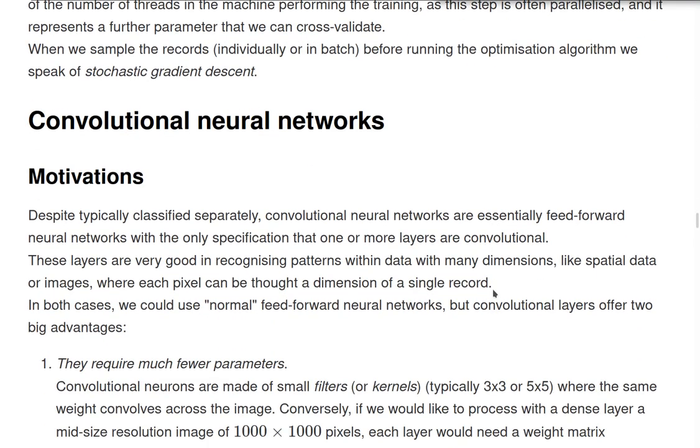We can now move on to a kind of neural network that at the end is not so much different than a feedforward neural network - convolutional neural networks. So let's first look at why we need these. They are essentially feedforward neural networks with the difference that some layers are of convolutional type, and they are very good in recognizing patterns where data has many dimensions and we can think of spatial data or images as data where each pixel is a dimension.